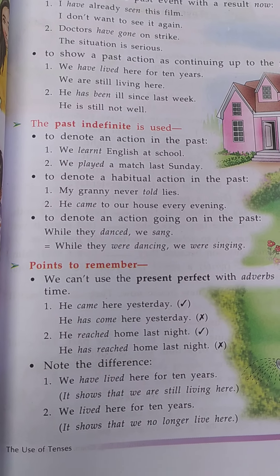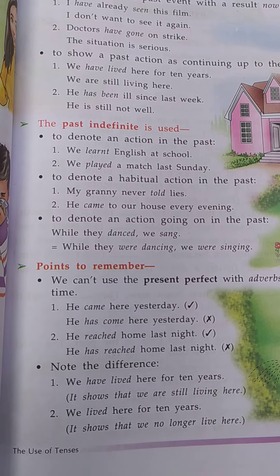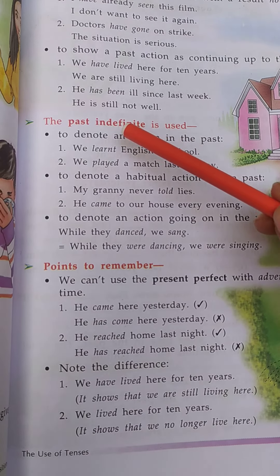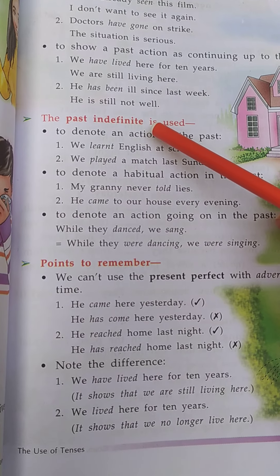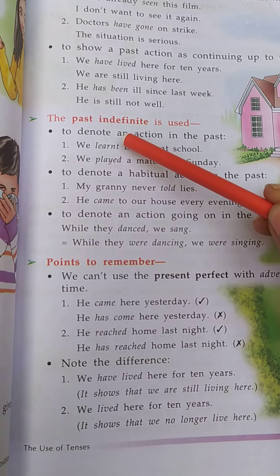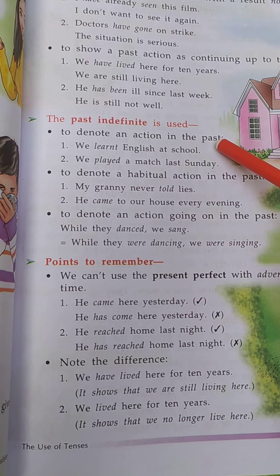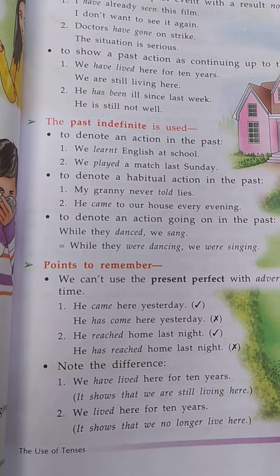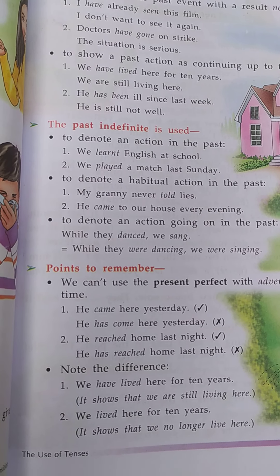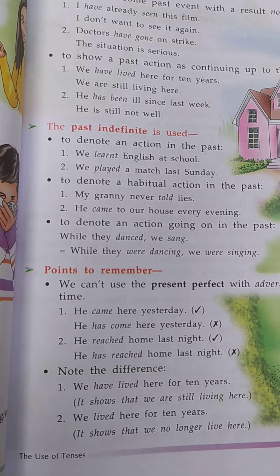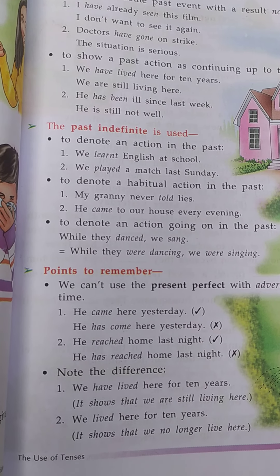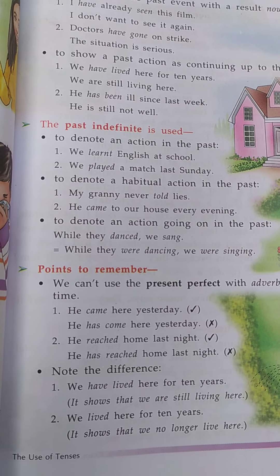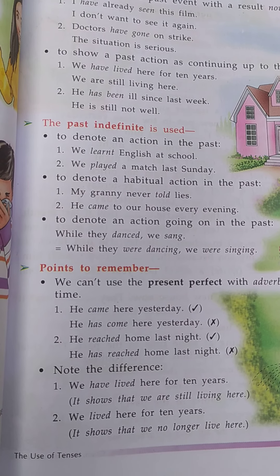आज की क्लास में हम पढ़ेंगे कि past indefinite या past simple tense को हम कैसे यूज करते हैं। The past indefinite is used to denote an action in the past. हम past indefinite tense को यूज करते हैं past time में — किसी action हुआ था, किसी work हुआ था — उसको show करने के लिए।